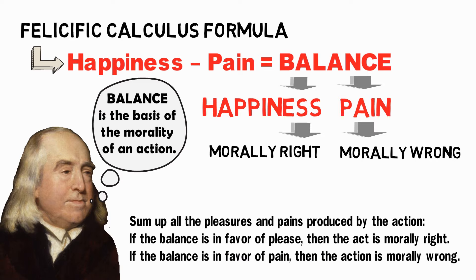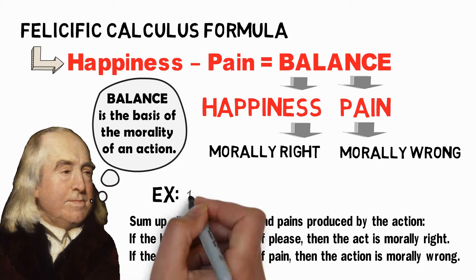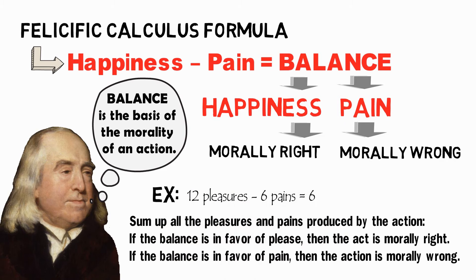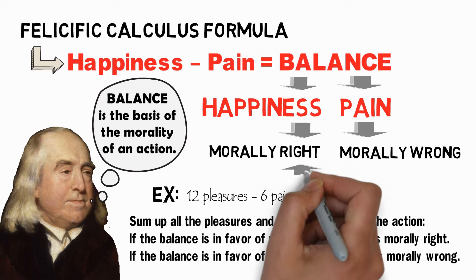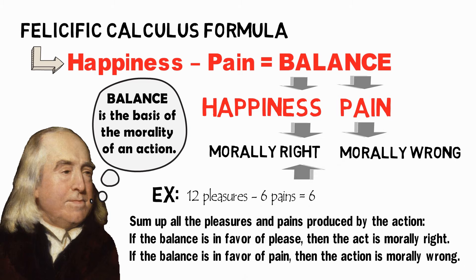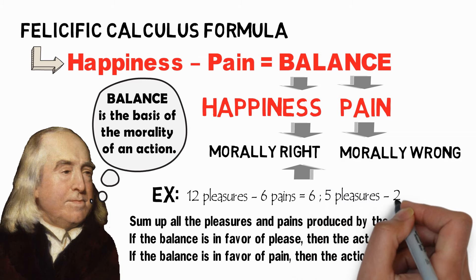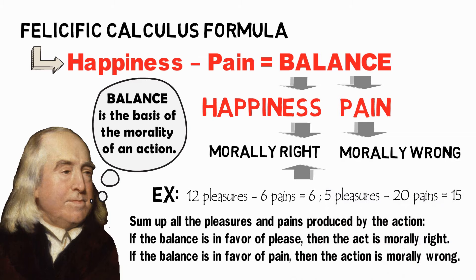Let us put it in a simple mathematical calculation. If an act produces 12 pleasures and 6 pains, then the balance is 6, which is in favor of pleasure or happiness — hence the action is morally right. However, if the act produces 20 pains and just 5 pleasures, then the balance is 15, which is in favor of pain — and in that case, for Bentham, the act is morally wrong.